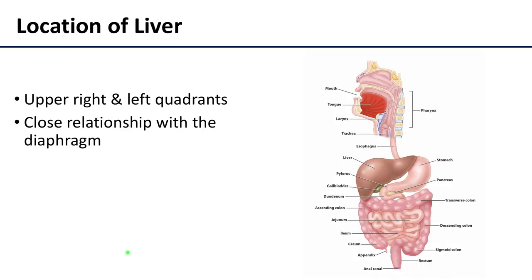The liver is considered the largest gland in the body and it takes up a large portion of the abdomen. It is located predominantly in the upper right quadrant of the abdomen, but it also extends into the left upper quadrant. It has a very close association with the diaphragm — you can feel the liver just deep to the diaphragm, and it performs a very close relationship there.